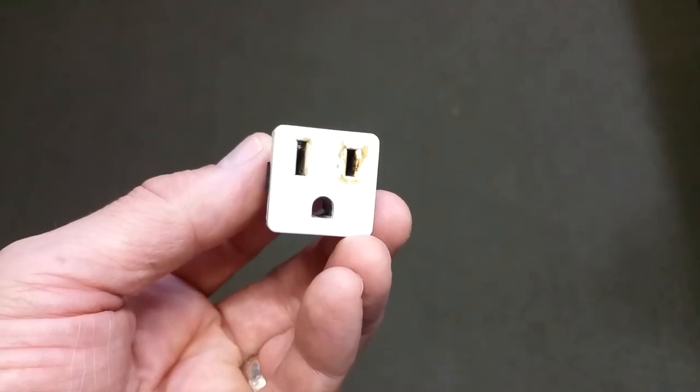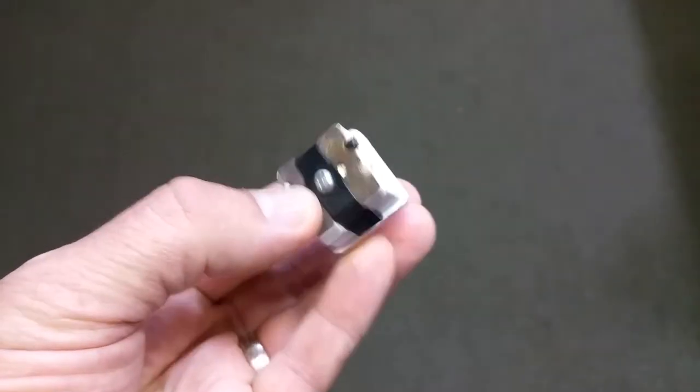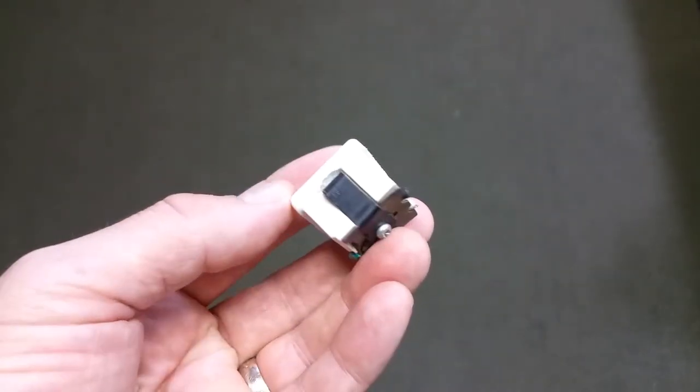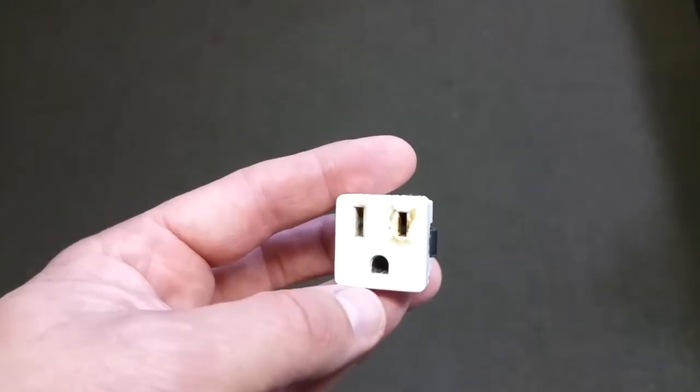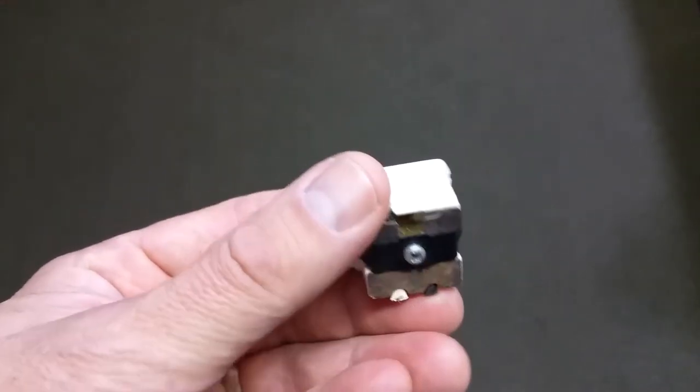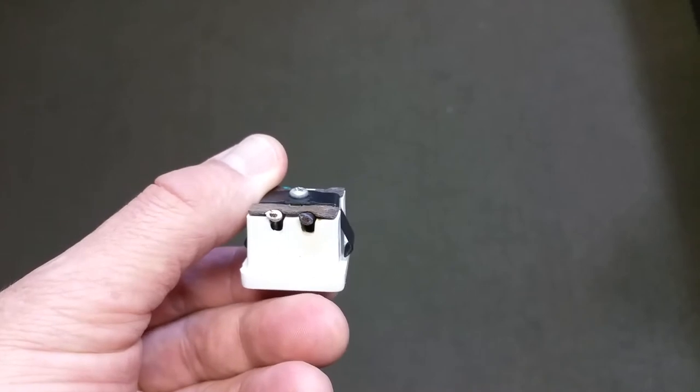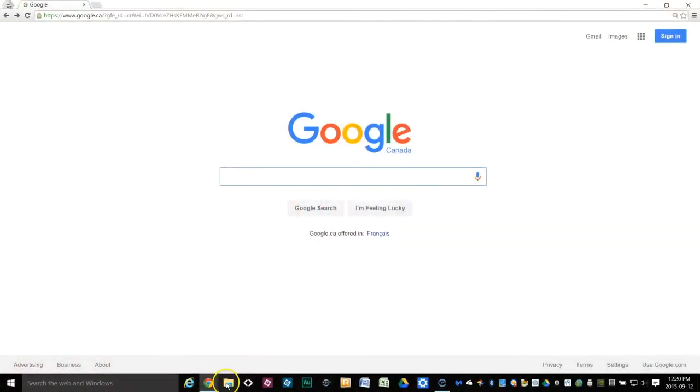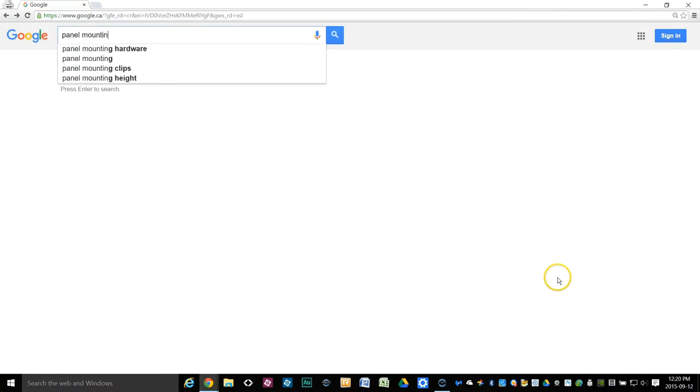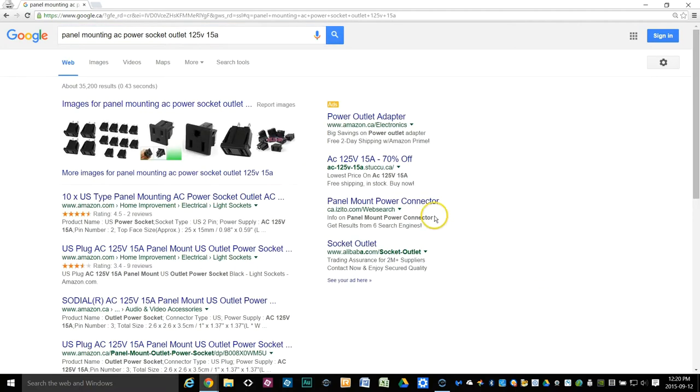Now surprisingly to me, not one building supply store that I found big or small could provide me with this outlet, and my appliance repair store said it had to be ordered. And even trying to find this online was a bit tricky. But using the following search, I had luck. On the Google search page, I searched panel mounting AC power socket outlet 125V 15A. As you can see, plenty of results, but interestingly, none that are of the color of our original white outlet.